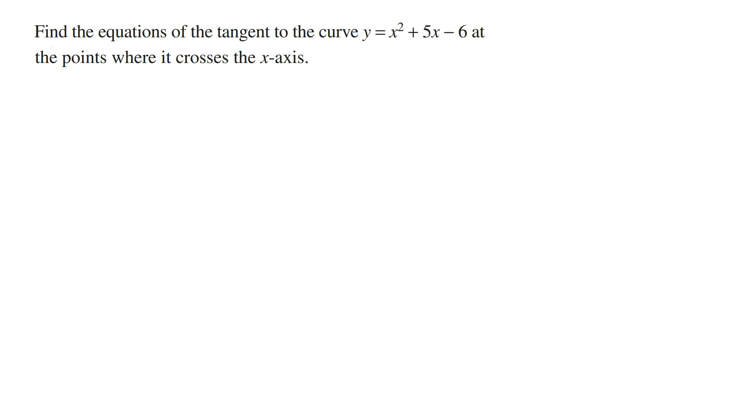Now whenever you're asked to find the equation of the tangent line, it's best to start with writing down the general rule for the equation of a straight line, and this is y minus y₁ equals m times x minus x₁, where x₁ and y₁ are the coordinates of the point and m is the gradient of this line.